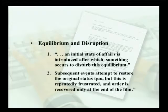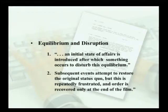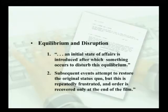The disruption can be anything — often it is a person or persons, the villains who come in and do something that disrupts everything. And of course it has to be restored, which brings us to number two: subsequent events attempt to restore the original status quo, but this is repeatedly frustrated and order is recovered only at the end of the film. There are attempts to restore order, but most of those attempts fail or don't do enough, yet we do find order at the end.